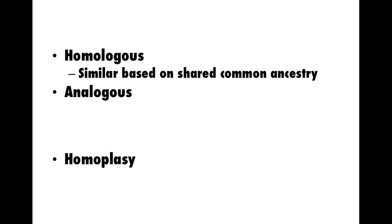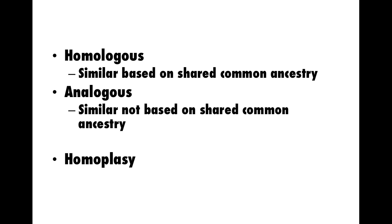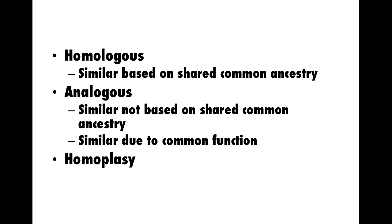A few more terms for us to learn: homologous, analogous, and homoplasy. Homologous characteristics are those that are similar based on shared common ancestry. But sometimes we'll see characteristics that are similar not based on shared common ancestry — those are the product of convergent evolution. Analogous characteristics are similar due to common function, not necessarily due to common ancestry.